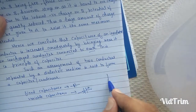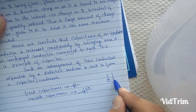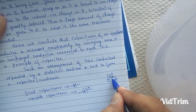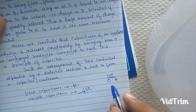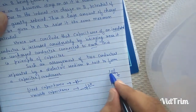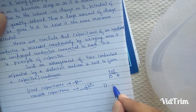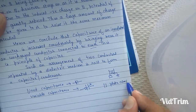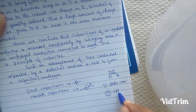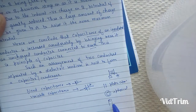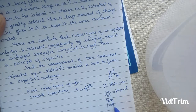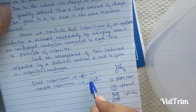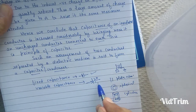Such an arrangement of two conductors — one insulated and the other earth-connected — separated by a dielectric medium, is said to form a capacitor or condenser. If the two conductors are flat plates, this is called a parallel plate capacitor. If they are spherical, it is called a spherical capacitor; if cylindrical, a cylindrical capacitor. A capacitor with fixed capacitance is represented by one symbol, and a capacitor with variable capacitance by another symbol.